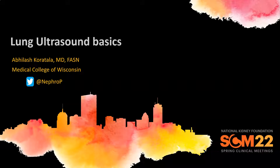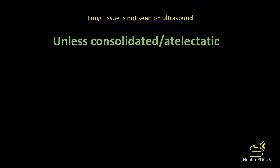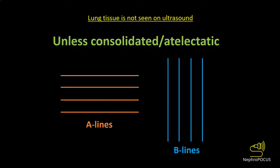In this video I will discuss some basic aspects of lung ultrasound for the nephrologist. An important thing to note is that lung tissue is not seen on ultrasound unless the lung is consolidated or atelectatic. All you would see is artifacts.